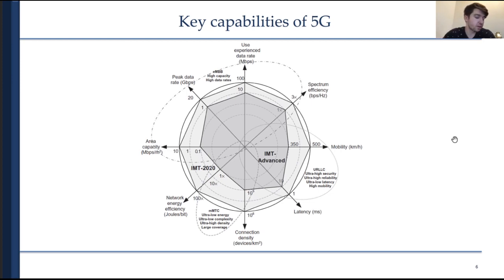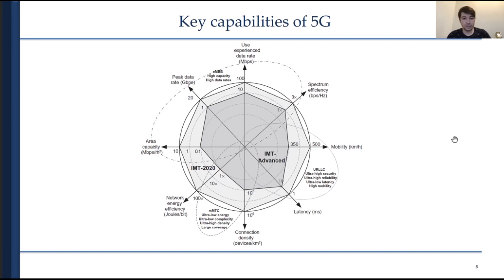After regulation comes the standards and requirements we want to impose on 5G systems. On this diagram we can see the key performance indicators. Going clockwise from the top: experienced data rate, spectrum efficiency, mobility, latency, connection density, network energy efficiency, area capacity, and peak data rate. We want to increase peak data rate by 20 times and experienced data rate by 10 times. Spectrum efficiency should increase by three times, though this may be challenging as it is already close to its theoretical limit.